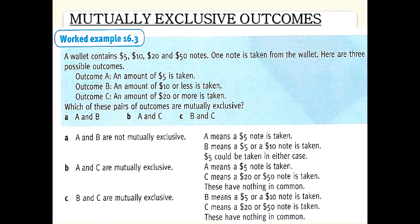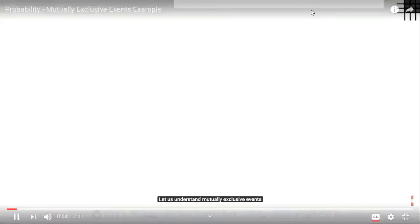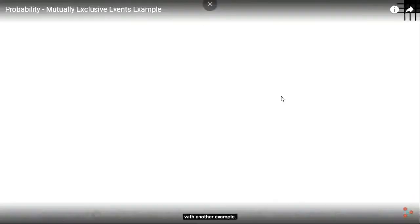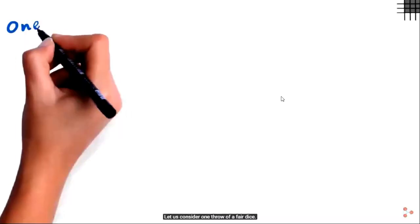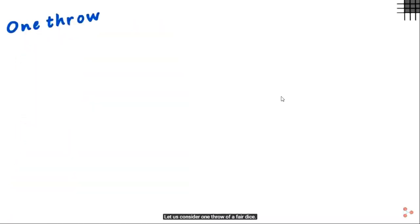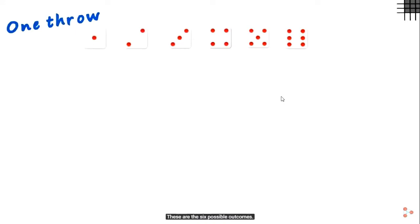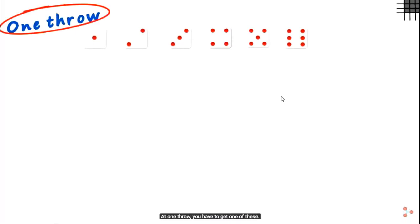Today our topic is mutually exclusive outcomes. Before I start, I'll show you a video related to this topic. To understand mutually exclusive events, let us consider one throw of a fair dice. These are the six possible outcomes — at one throw, you have to get one of these.